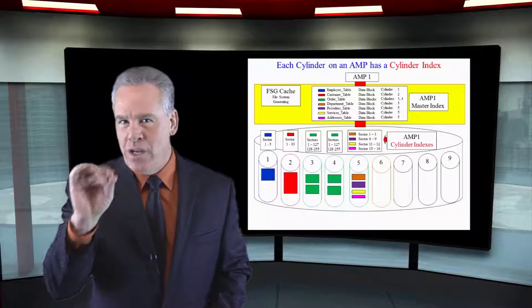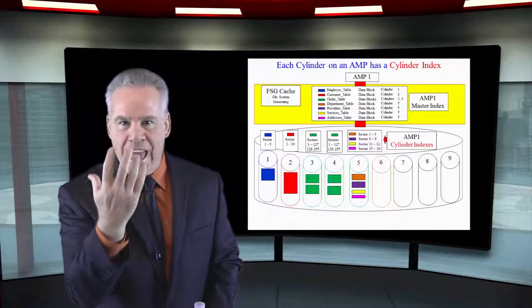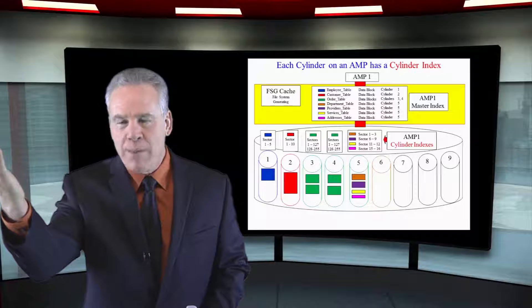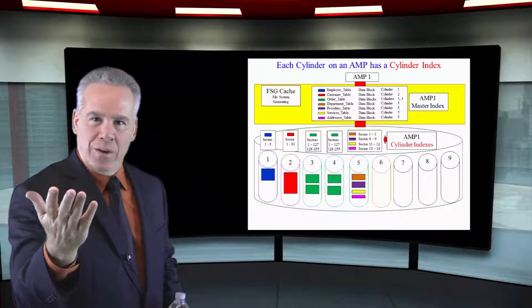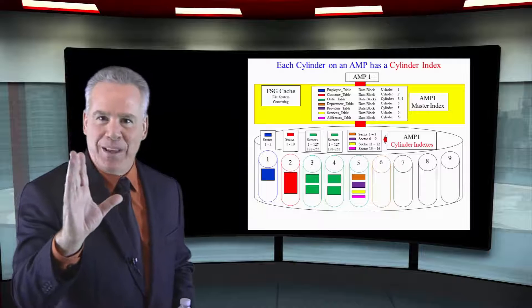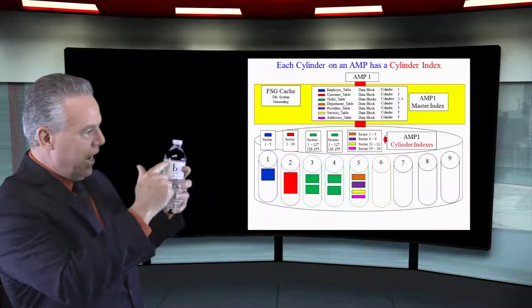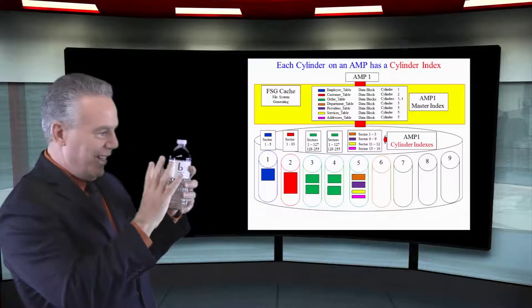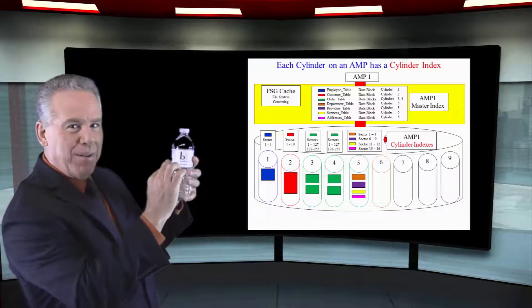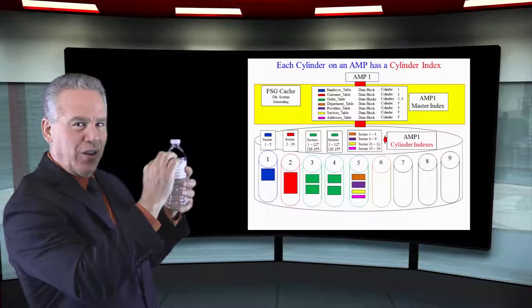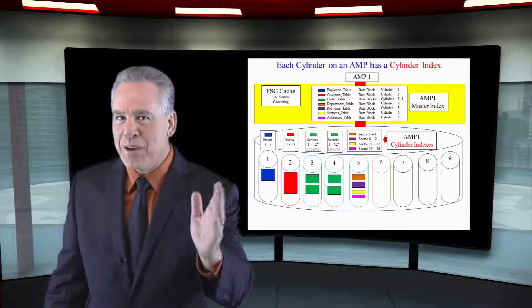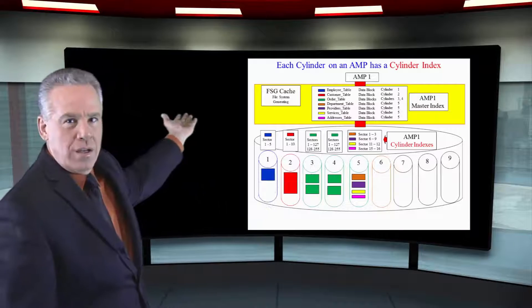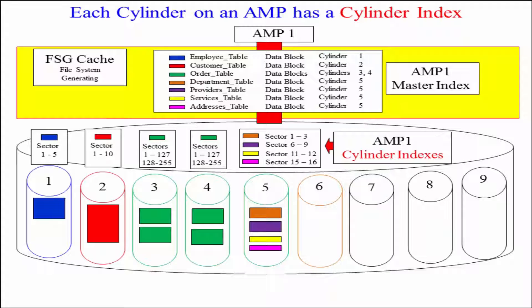Each amp's master index is unique to that amp. A different amp will have the same tables, different rows. Who knows where it's going to put it? Not definitely in the same places, but this amp knows that it's got these cylinders and it's got the data blocks inside the cylinder. So I want you to see something very clearly. Every amp has one and only one master index unique to what it's been doing.